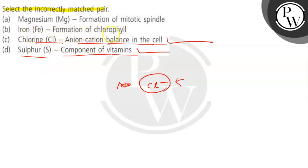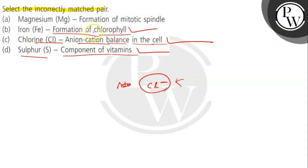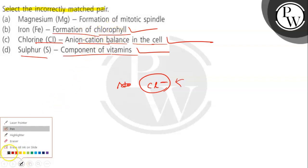Then iron is linked with the formation of chlorophyll. Iron participates in the formation of chlorophyll — that is the main role of iron. So this statement is also correct.